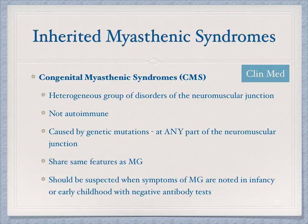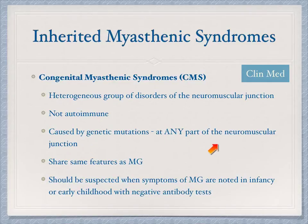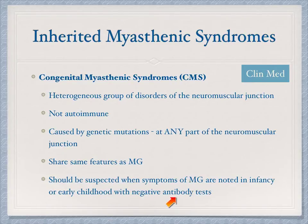Inherited myasthenic syndromes are very similar to myasthenia gravis; however, they are caused by a genetic problem, not an autoimmune process. This is a heterogeneous group of disorders affecting the neuromuscular junction, sharing the same symptoms but caused by a genetic mutation in any part of the neuromuscular junction, not just the postsynaptic terminal. This should be suspected in anyone with myasthenia gravis symptoms in infancy or early childhood with negative antibody tests — consider congenital myasthenic syndrome.